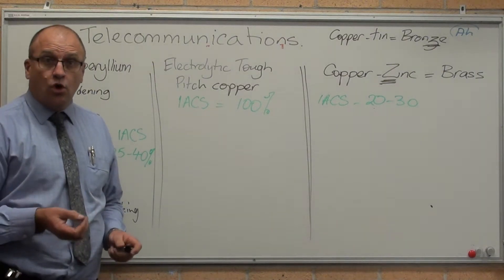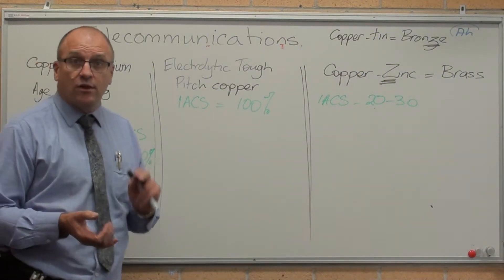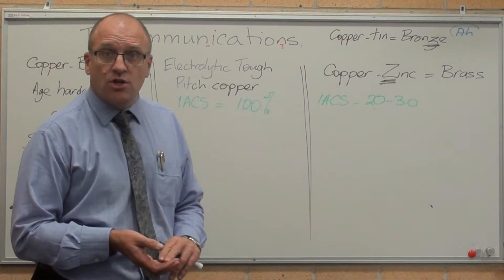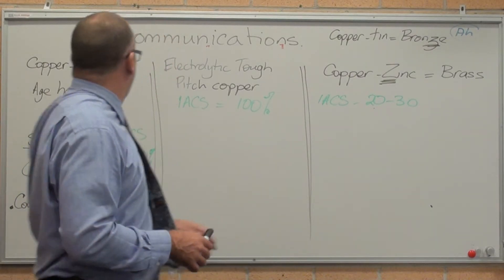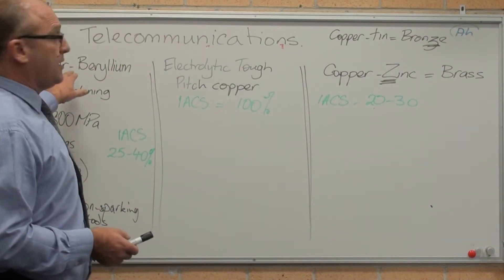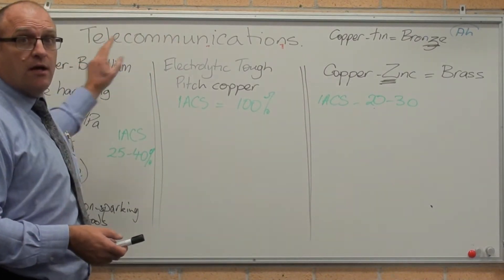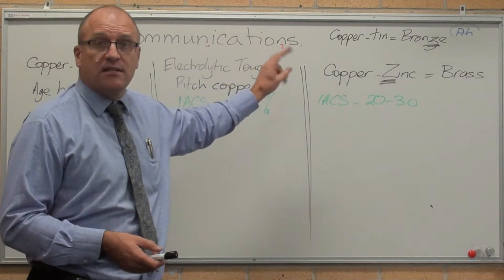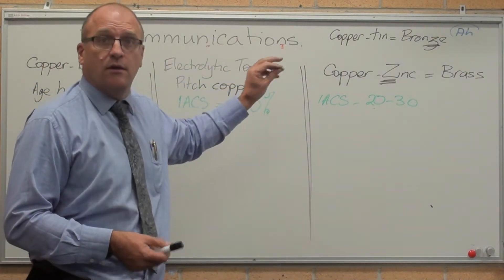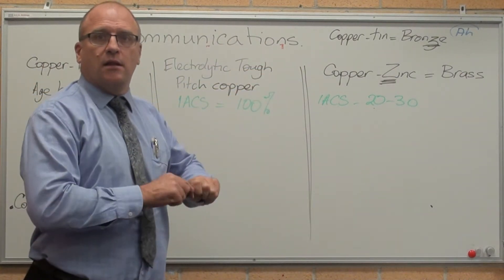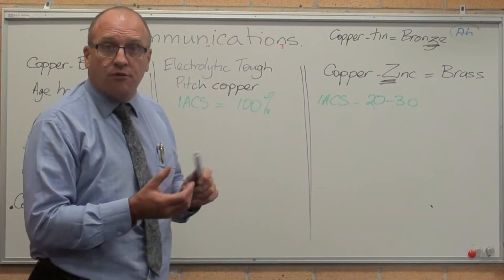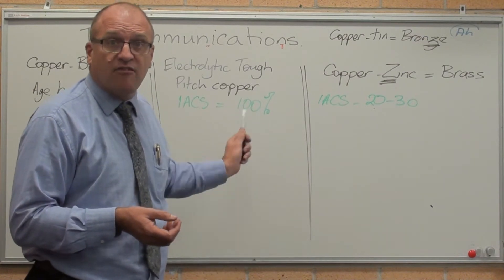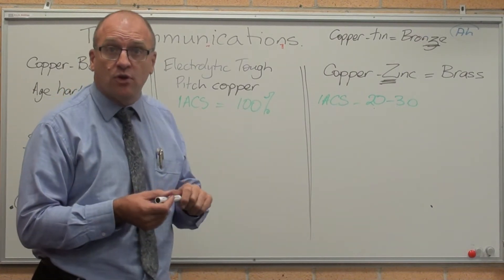The syllabus asks us to talk about the typical materials used in telecommunications, including copper-beryllium, electrolytic tough-pitched copper, and copper-zinc. Let's just go through them. I'll probably start with electrolytic tough-pitched copper first.